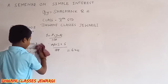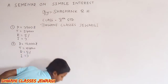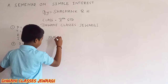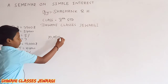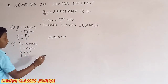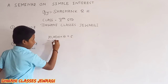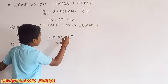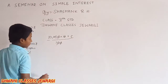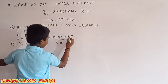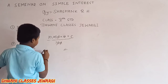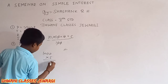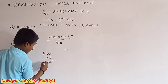Second question. P is equal to 10,000, T is equal to 10, R is equal to 5, divided by 100. Cancel this zero, cancel this zero, cancel this zero, cancel this zero. Is equal to 1, 5 is 5. 5,000. Answer is equal to 5,000.